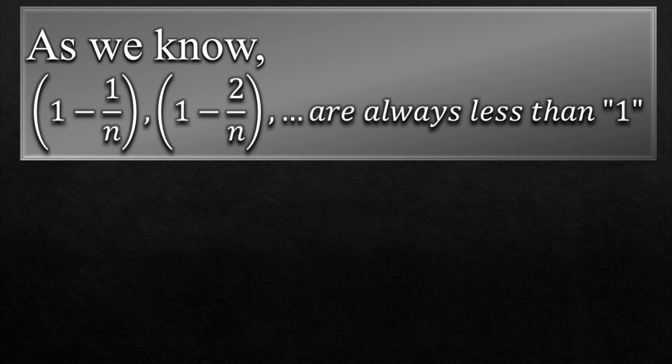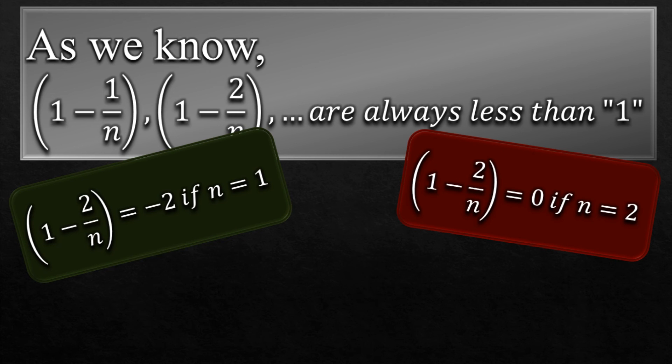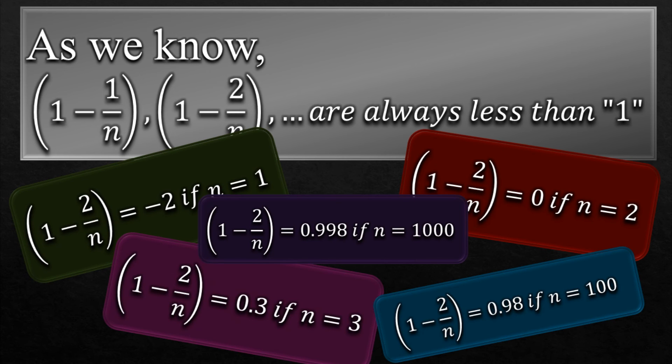Same is the case for (1 - 2/n), (1 - 3/n) and so on. I am showing you these examples just for your understanding. It's definitely not the part of the actual proof, but it surely helps to understand and I don't want you guys to memorize stuff. So what we learned so far is these terms are always less than 1, and we know if we multiply something with a factor that is less than 1, we decrease its value - like if 2 is multiplied by 0.5 let's say, we get 1. The value of 2 gets decreased.